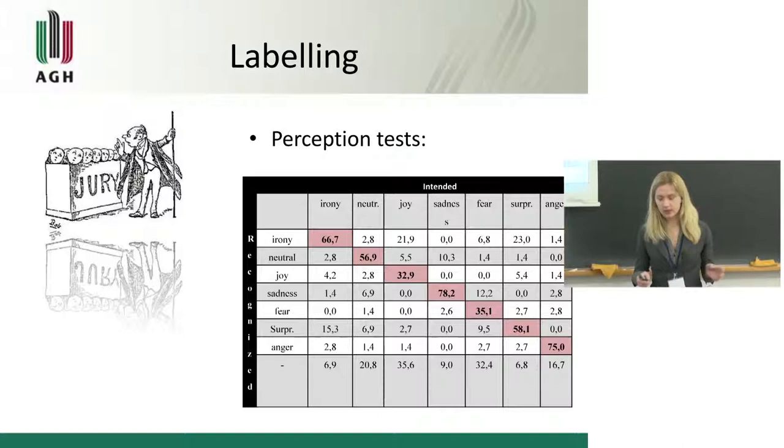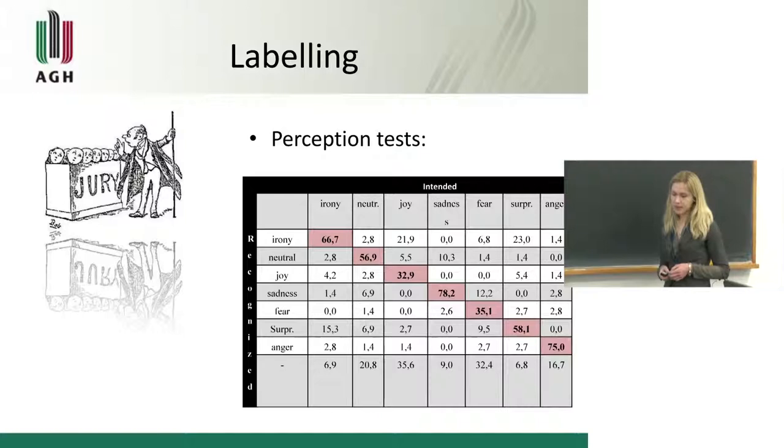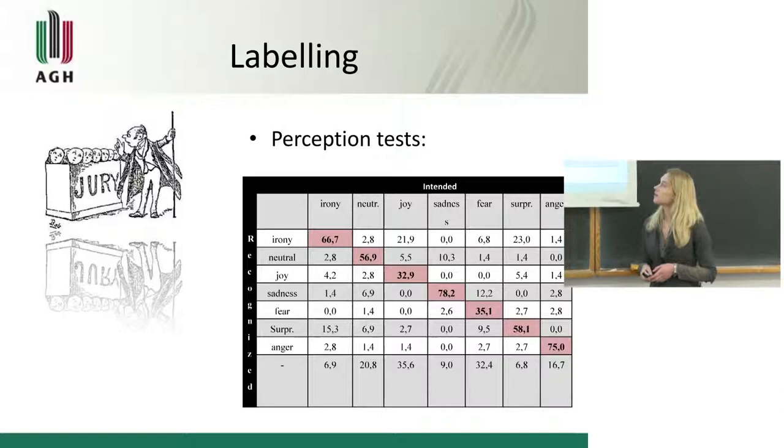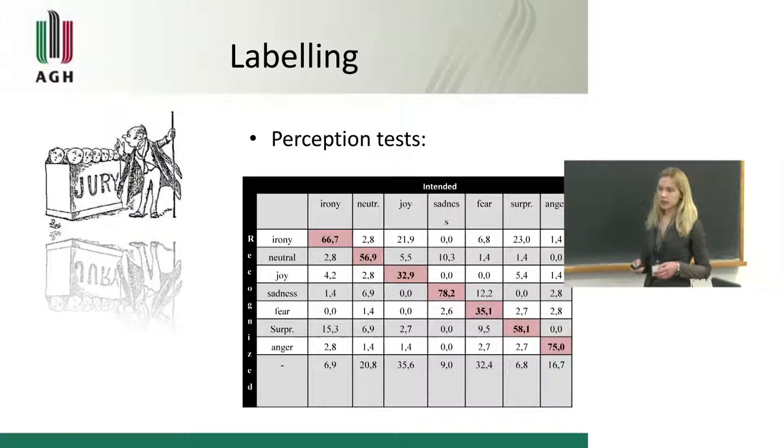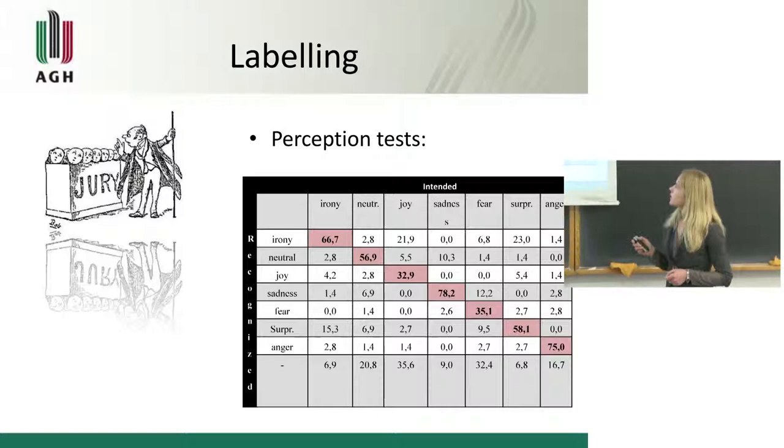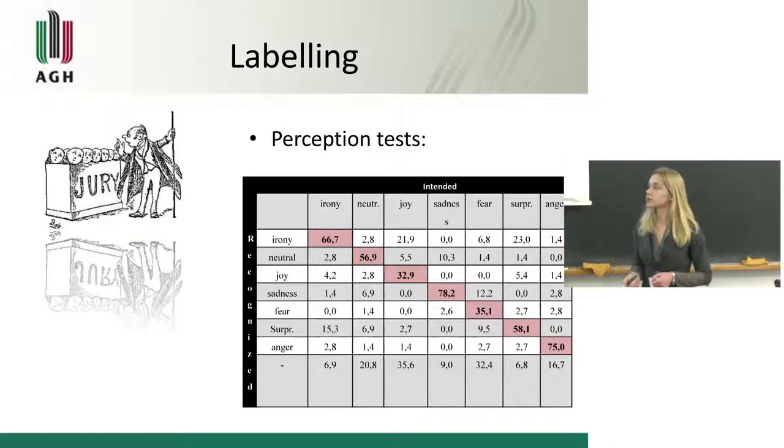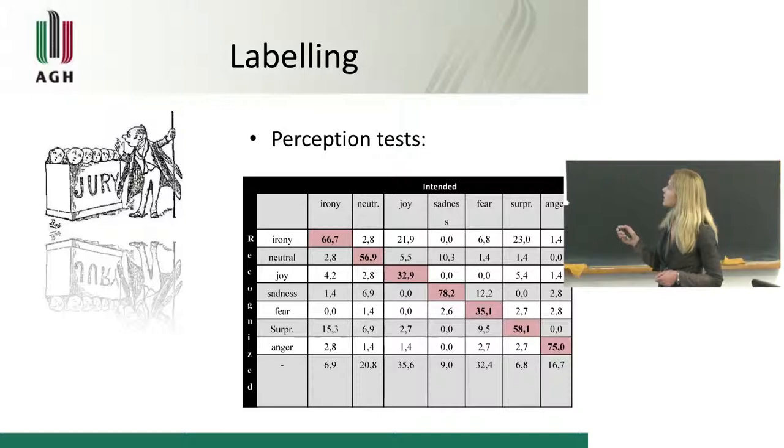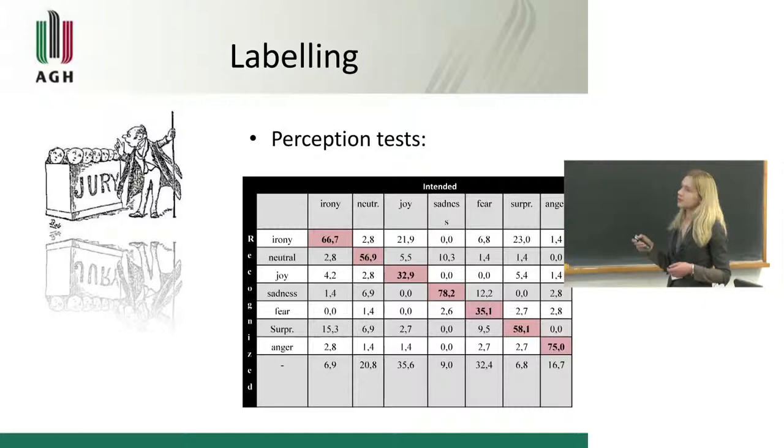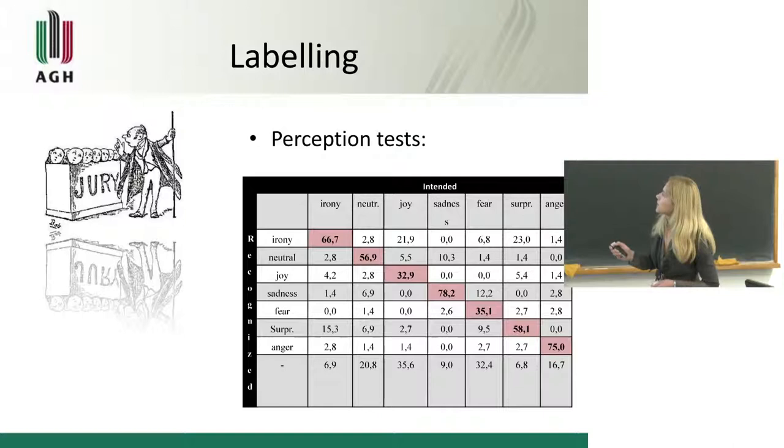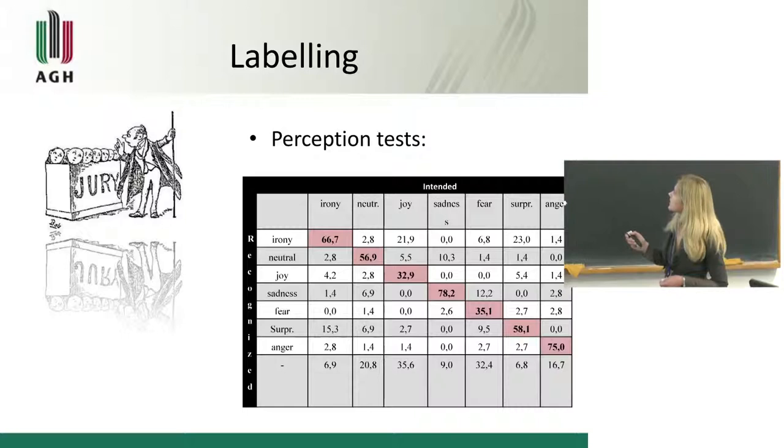After making the recordings next step is properly labeling them. There was a group, a statistical group of listeners, and their task was to listen to the recordings and decide what emotion they can hear in it. So here in column we have intended emotions by actors and in the rows, recognition by listeners. On the diagonal we can see effectiveness of recognizing of each emotion and we can easily observe that for example anger is easily recognizable by listeners and also well performed by actors. The same with sadness, but for example fear was really difficult for actors to perform.